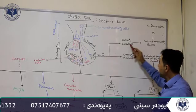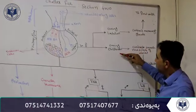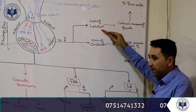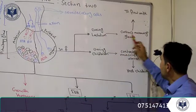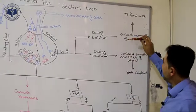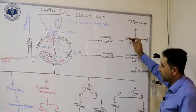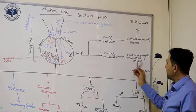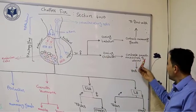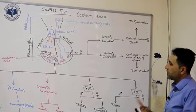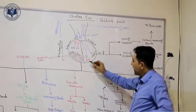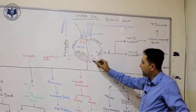In females, oxytocin has two targets and is produced in two situations. During lactation or breastfeeding, oxytocin targets the mammary glands and causes them to contract and release milk — not milk production. During childbirth, it contracts the smooth muscles of the uterus to help with delivery.